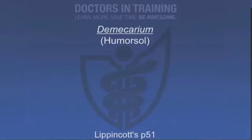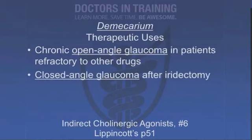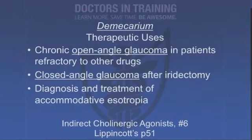Demecarium is another cholinesterase inhibitor used to treat glaucoma — usually chronic open-angle glaucoma in patients refractory to other drugs, so it's not first-line. It can also be used to treat closed-angle glaucoma after iridectomy. Demecarium can also diagnose and treat accommodative esotropia, where farsighted patients try to accommodate by making themselves cross-eyed. Its mechanism of action and side effects are similar to neostigmine.